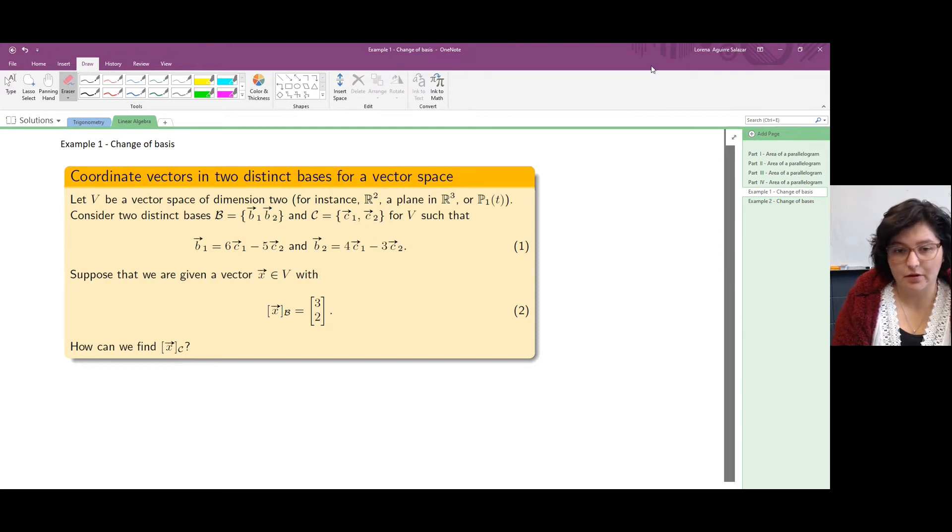There's a relationship between points in B and points in C. We're given a vector in the vector space. We have coordinates of a vector with respect to one of the bases, and we want to find coordinates of the vector with respect to the other basis. So let's see how we work with this problem.